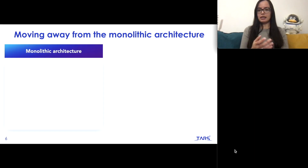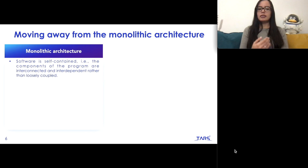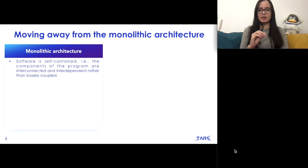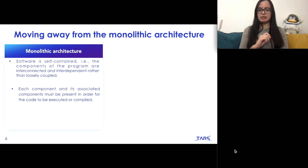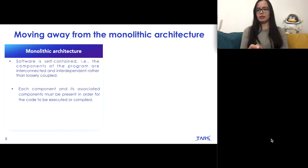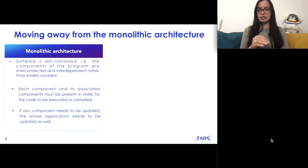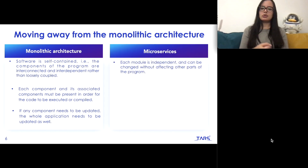Here I'm going to explain the difference between those two types of architecture and why people are using microservices nowadays. Monolithic architectures means that the software is self-contained — the components of the program are interconnected and interdependent rather than loosely coupled. Each component is associated with others and must be present in order for the code to be executed or compiled. If any of those components are updated, the whole application needs to be updated as well, which is a big problem for developers. In microservices, by contrast, each module is independent and can be changed without affecting other parts of the program.